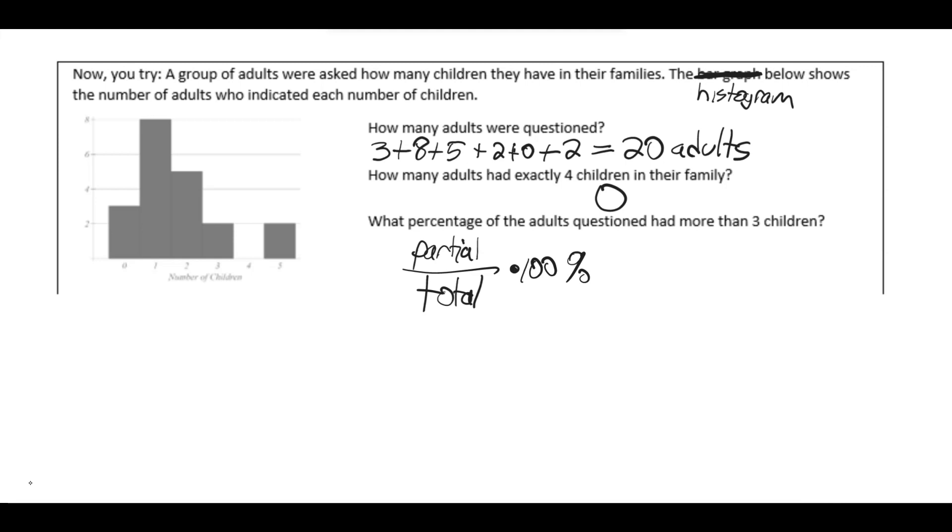Well, more than three children, we wouldn't count any of those. The only ones we'd account for are those, and we in fact only get five, because there were none with four. So the height of this bar, this bar represents two adults. So the partial would be the two adults that answered. The total would be the 20 adults that were in the sample.